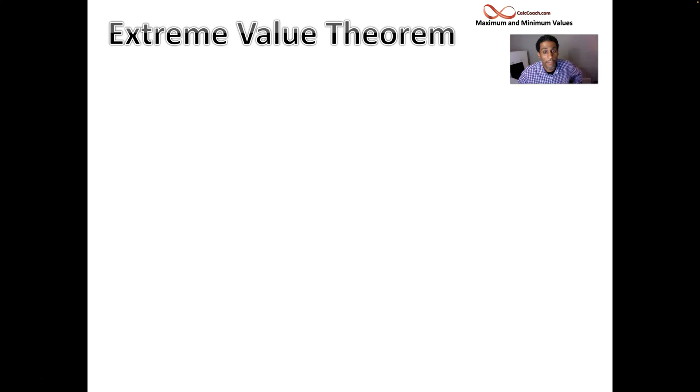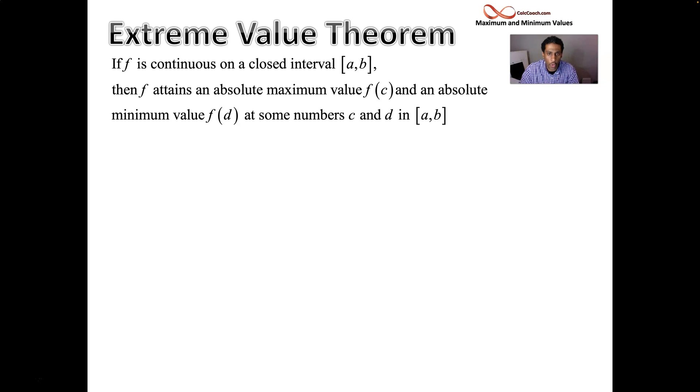Let's start with the extreme value theorem. Here's what it says. As long as your function is continuous on an interval that is closed, then you're sure that the function will attain its absolute maximum value somewhere inside the interval or on the endpoints. There's going to be some value c that's inside of our [a,b] interval, maybe on the endpoints, that f(c) will be the absolute maximum value and f(d) will be the absolute minimum value. It will attain its absolute maximum and its absolute minimum as long as the interval is closed and the function is continuous on that interval. The issue with this theorem is that it is an existence theorem. It doesn't tell us how to find it.